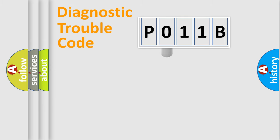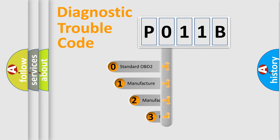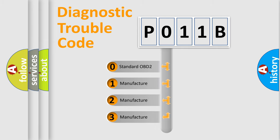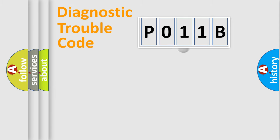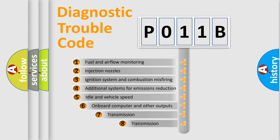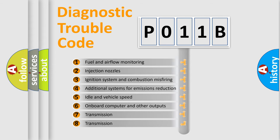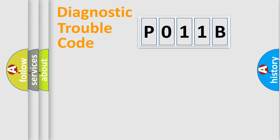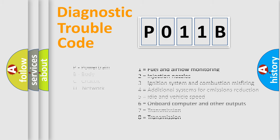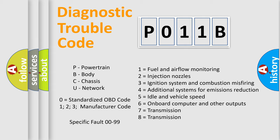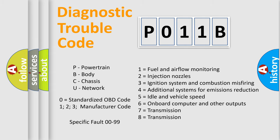This distribution is defined in the first character of the code. If the second character is expressed as zero, it is a standardized error. In the case of numbers 1, 2, or 3, it is a more specific expression of a car-specific error. The third character specifies a subset of errors. The distribution shown is valid only for the standardized DTC code. Only the last two characters define the specific fault of the group. Such a division is valid only if the second character code is expressed by the number zero.